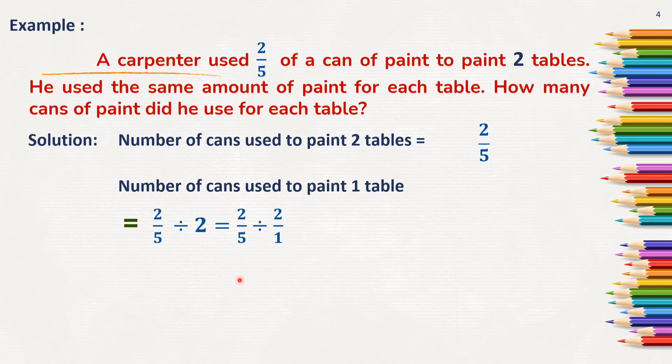In the previous videos, we have understood how to find the reciprocal of a given fraction, right? So, here 2 by 5 into 1 by 2 which is equal to 2 into 1 and 5 into 2.